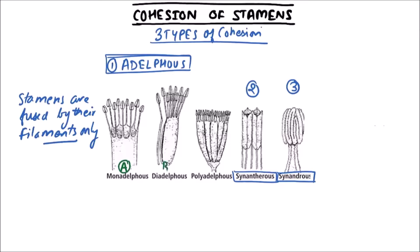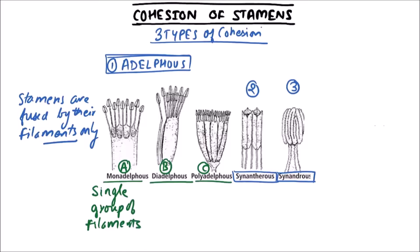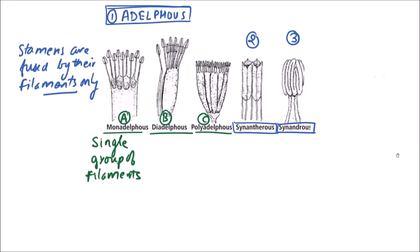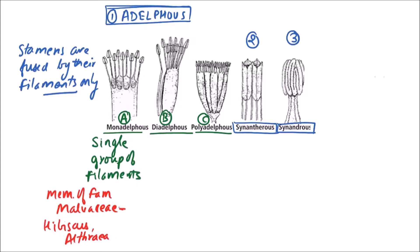The three groups are monoadelphous, diadelphous, and polyadelphous. Monoadelphous means if a single group of filaments is formed, then it is monoadelphous. Examples include members of the family Malvaceae, like Hibiscus and Althaea.